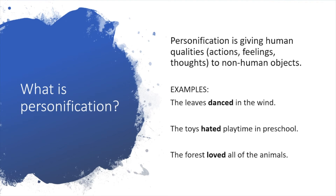One more example: the forest loved all the animals. Again, a forest can't feel emotions. But by saying the forest loved all the animals, you can kind of know that the forest is the home for the animals — it takes care of them. So all of these examples give some imagery, some feeling, some way for the reader to picture what's happening. And this is personification: actions, feelings, or thoughts that non-human objects exhibit.